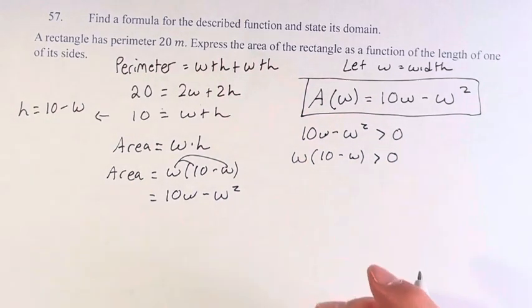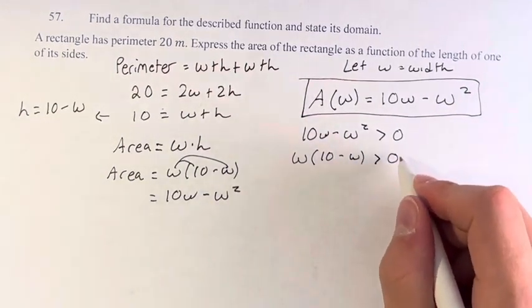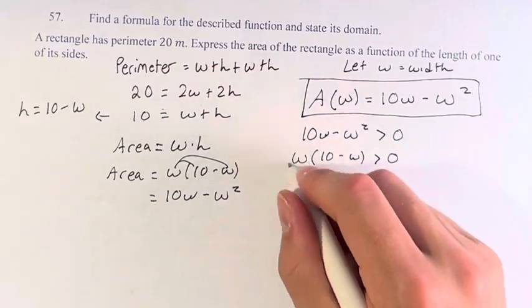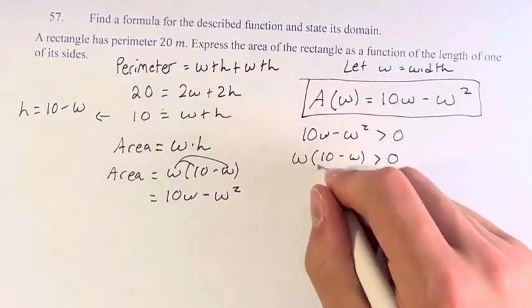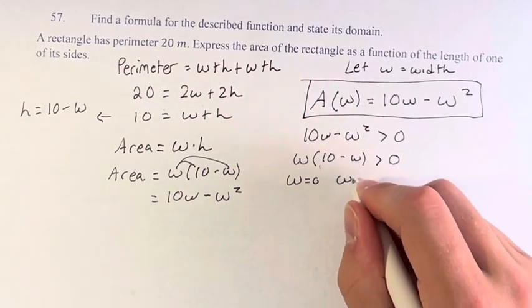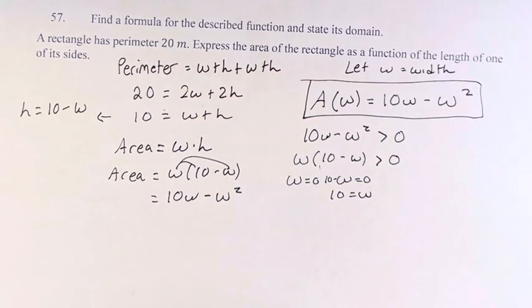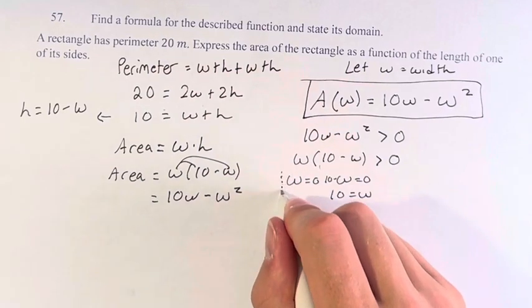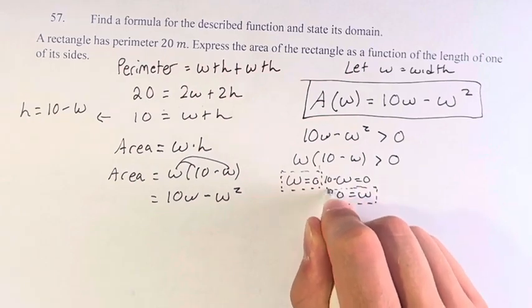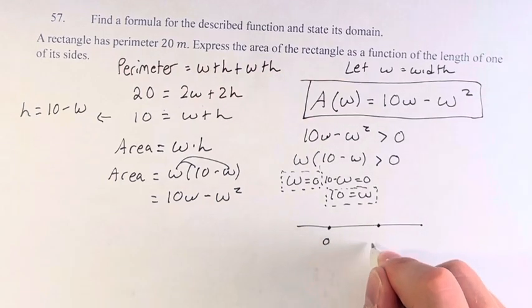And this gives us the zeros of this. If this was a quadratic where we're solving it, w times 10 minus w equals zero. Only equal to zero if this is equal to zero or this is equal to zero. So w equals zero or 10 minus w equals zero, in which case 10 equals w. So we have our two zeros, and this is going to be, for our inequality, zero and 10.